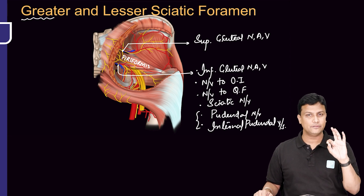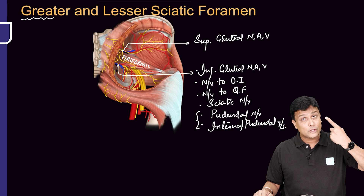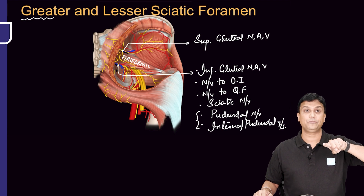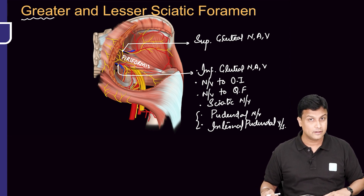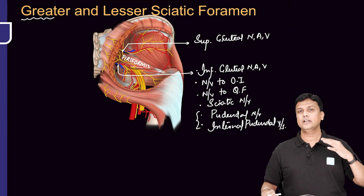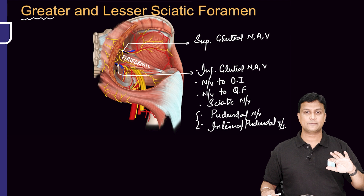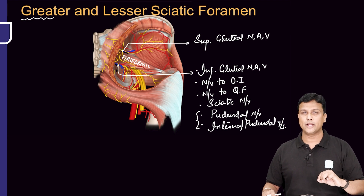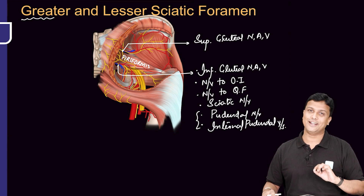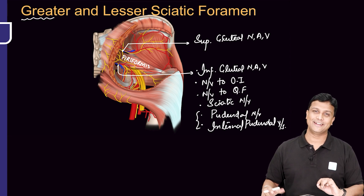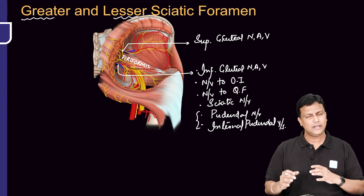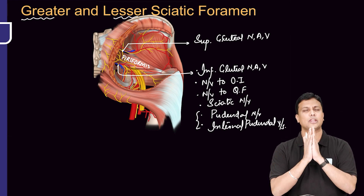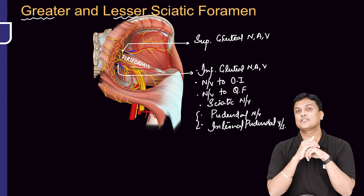These three structures are going to turn around the ischial spine. After turning around the ischial spine, they are going to again come via the lesser sciatic foramen, and from there they will be reaching the perineum region.